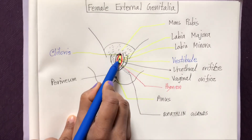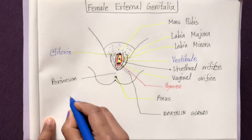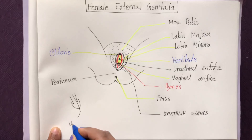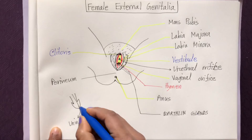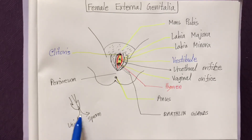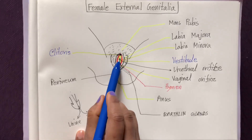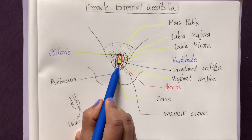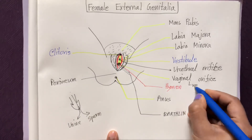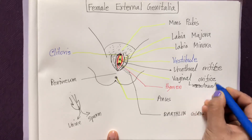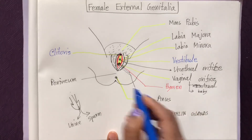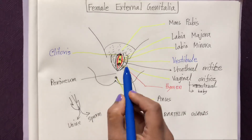In females, urine and reproduction have two different pathways. In males, the penis serves as a single pathway for both urine and sperm. But in females, the urethral orifice is for urine, while the vaginal orifice is for reproduction — through it, menstrual blood comes out, and during normal delivery, the baby also comes out through the vaginal orifice. It is also used for sexual intercourse.